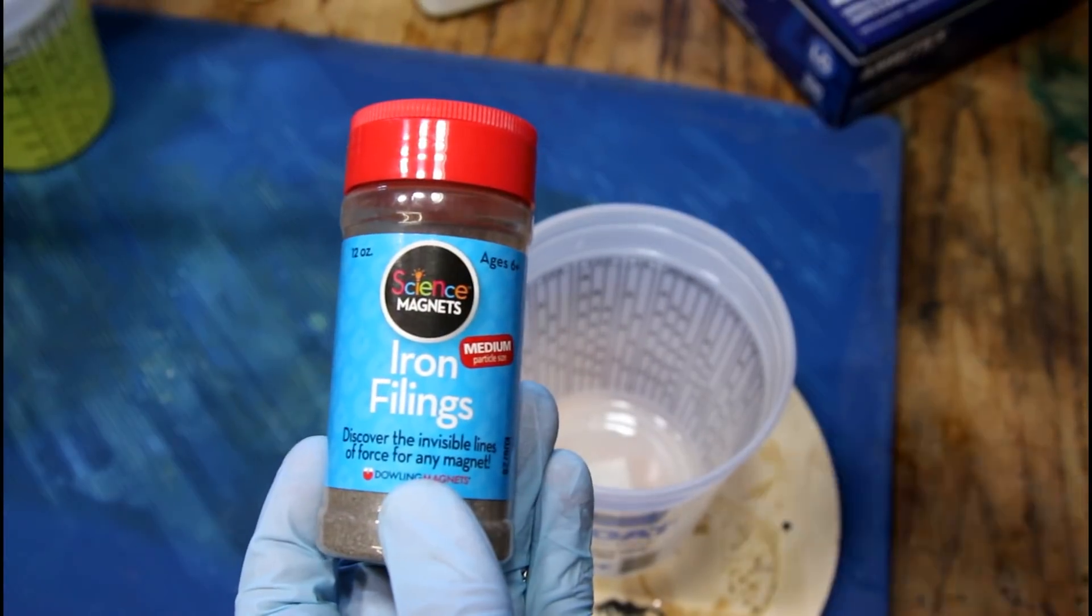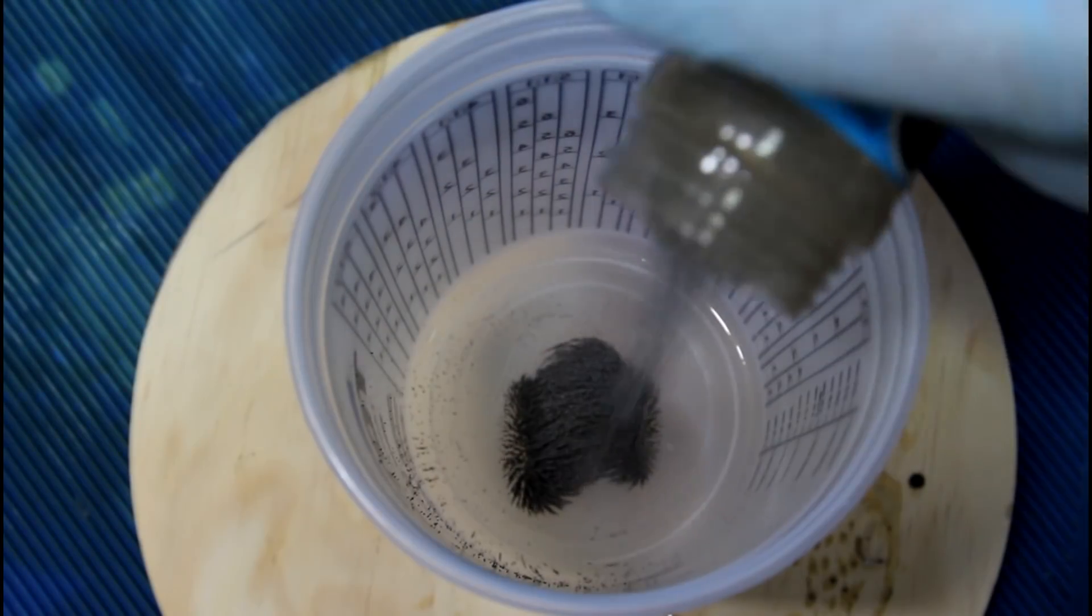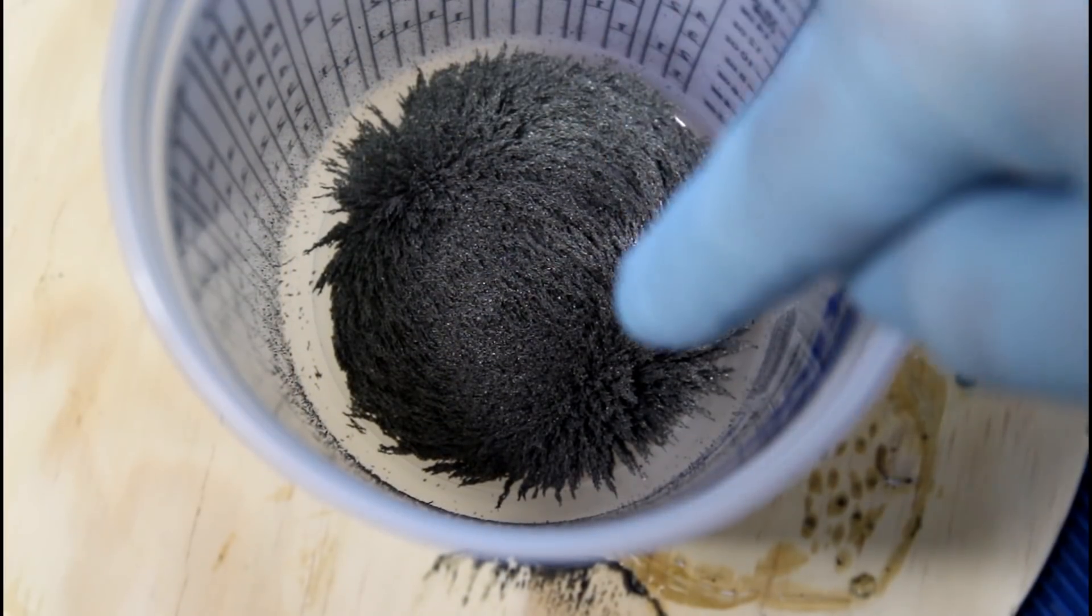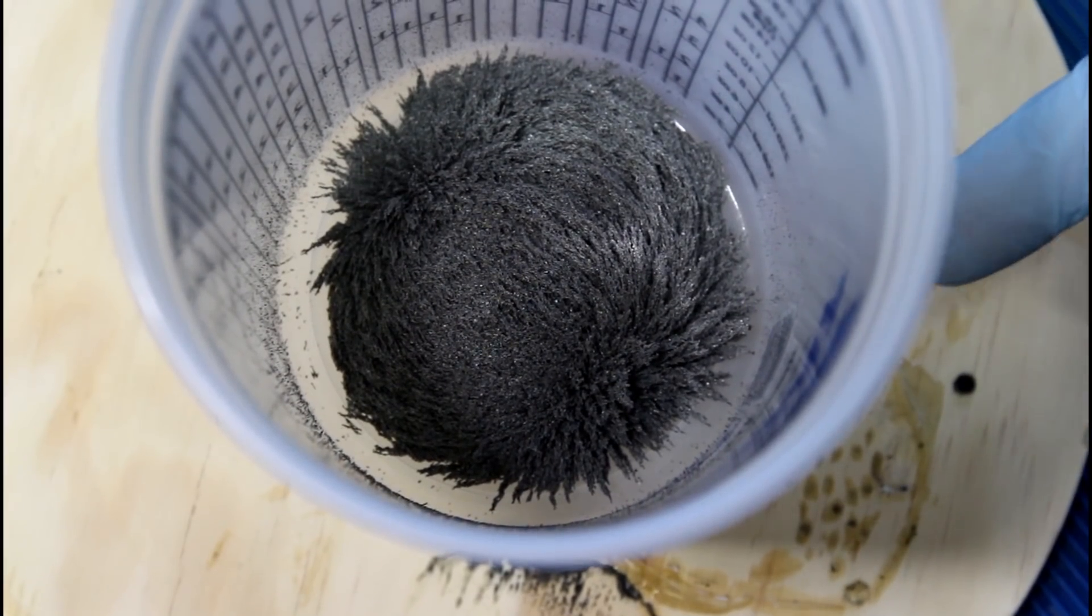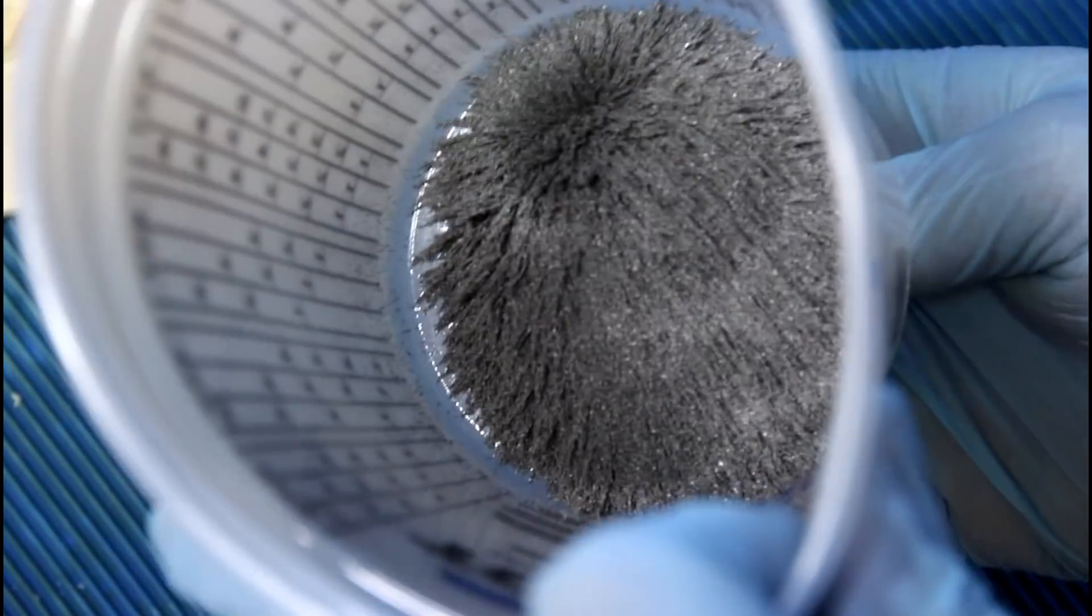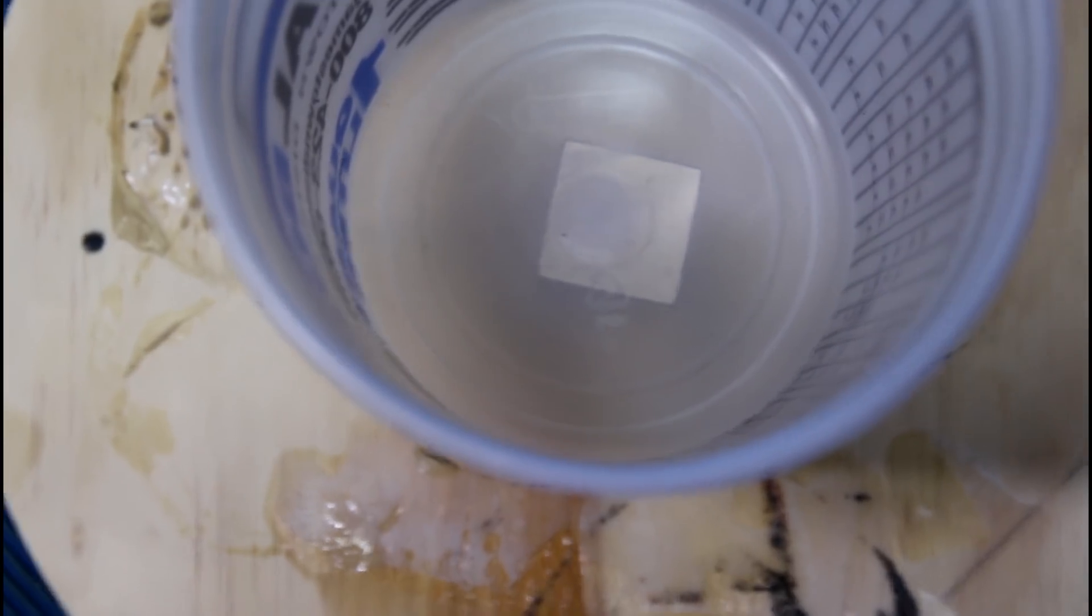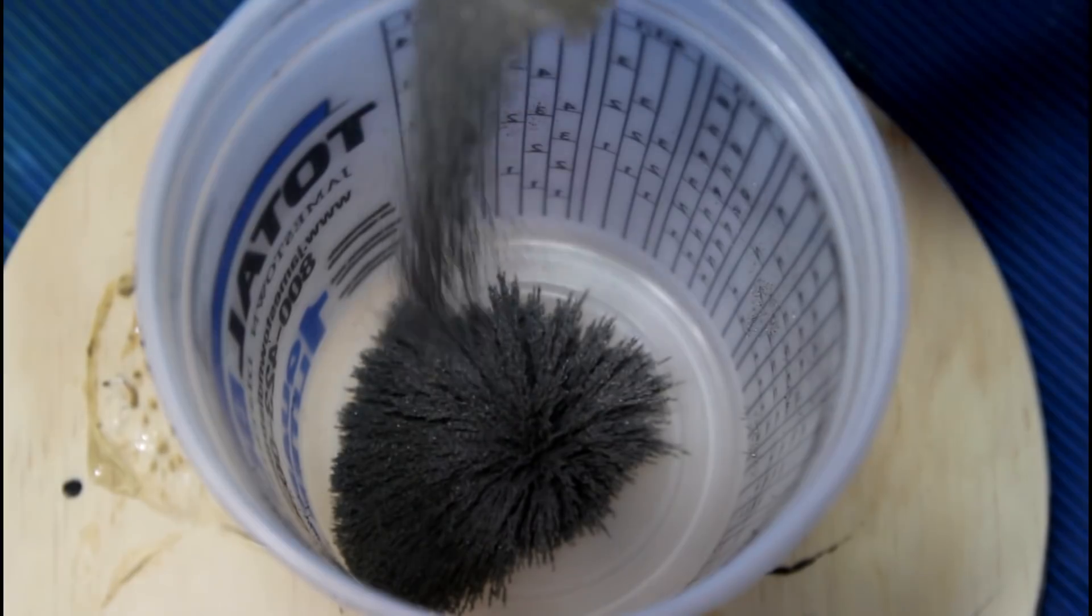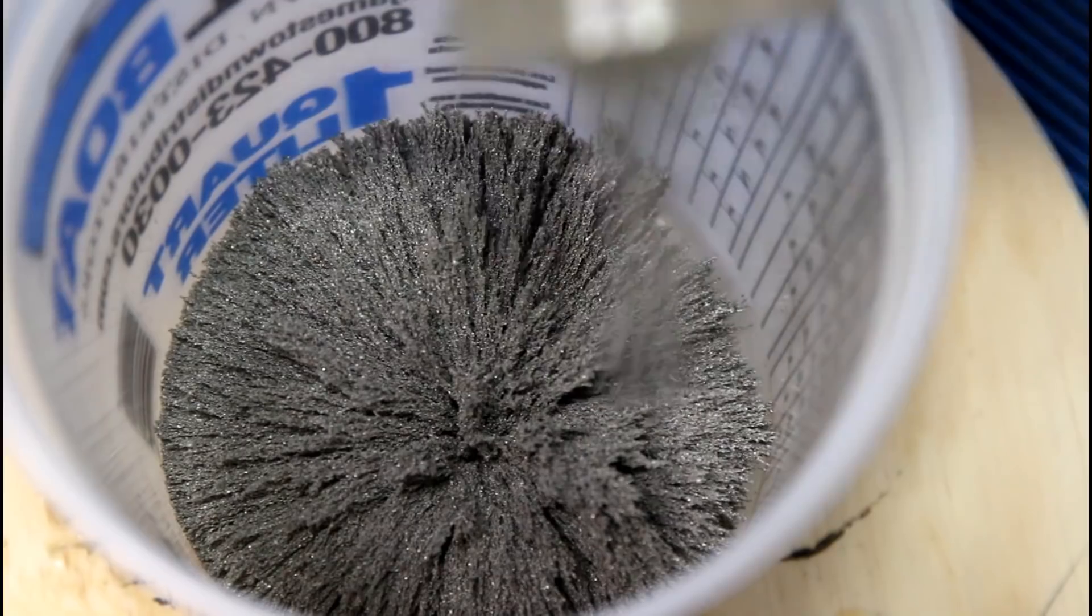Next step, iron filings. And we're just literally just going to pour them in. See how it looks like an old man's comb over? That's because of the way that the magnet is facing. If I was to shift this 90 degrees, see how I get a blossom now? So let's do this take two. Yes. Spikes. I want it all the way around.